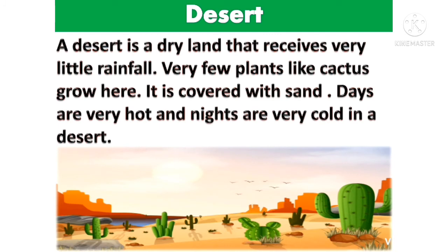Desert. A desert is a dry land that receives very little rainfall. Very few plants like cactus grow here. It is covered with sand. Days are hot and nights are very cold in a desert.